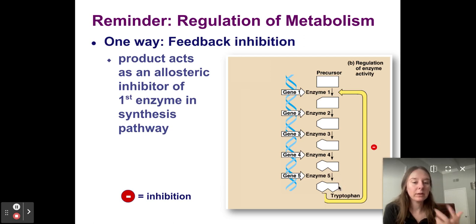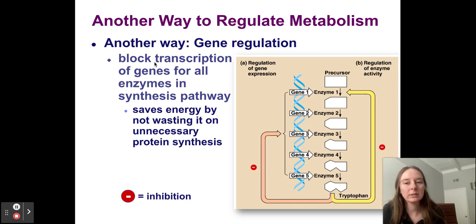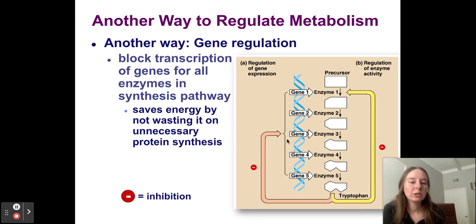We regulate the activity of an enzyme, but there's another way to do this. Instead of allosteric inhibition of a molecule, we can actually regulate genes — turn them off or on. We can block transcription of genes for all the enzymes in a synthesis pathway, saving energy. We won't be building new enzymes because we don't need those chemical reactions anymore. If we have enough tryptophan, tryptophan will turn off all of these genes at once so we don't need any more enzymes. This is still negative feedback — enough of something turns off something else. Instead of turning off the enzyme itself, we're turning off the production of enzymes, which saves a lot of energy.